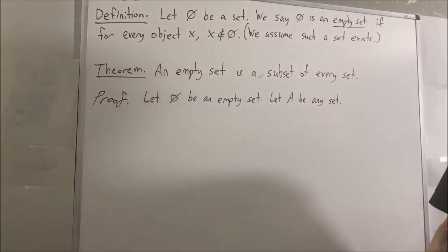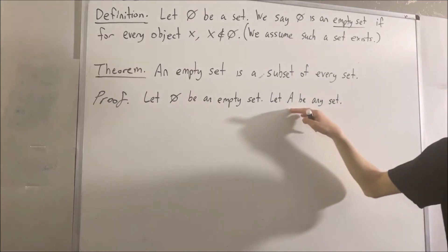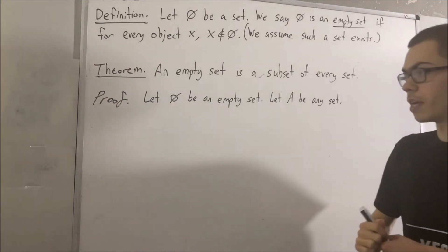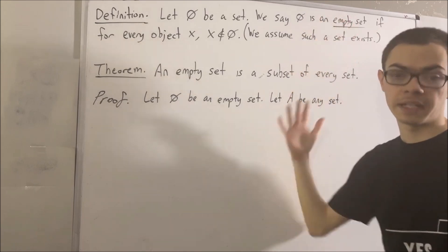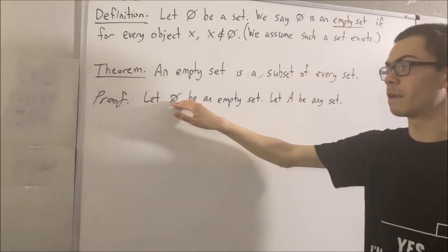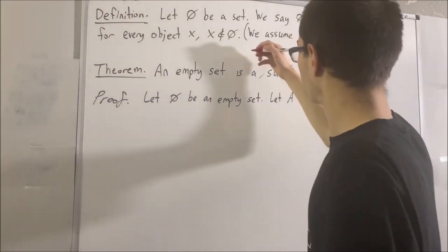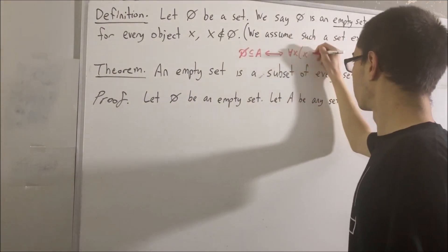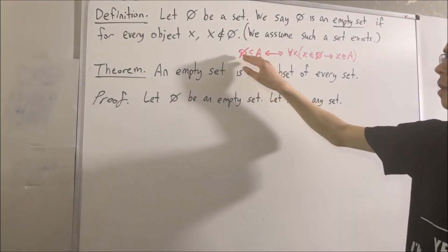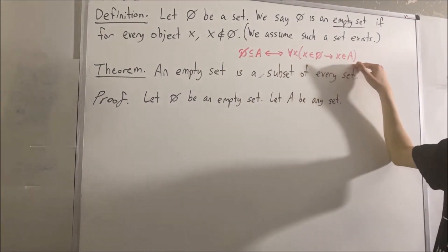Okay, so then, what does it mean for our empty set to be a subset of A? Well, by definition, what that means is: for every object x, if x is an element of our empty set, then x is an element of A. So to prove that our empty set is a subset of A, this is what we've got to prove.